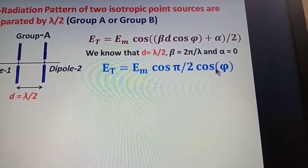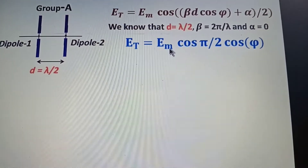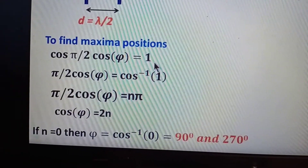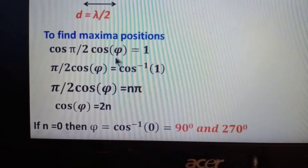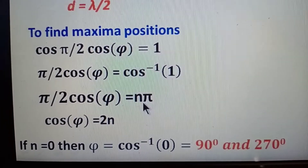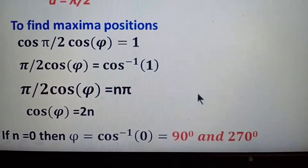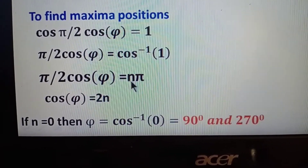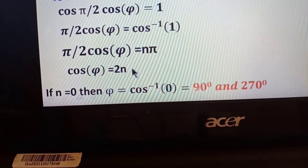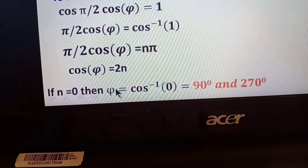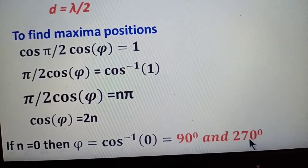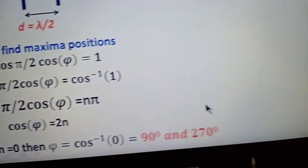To find the maxima positions, we set cos((pi/2) * cos(phi)) = 1, meaning (pi/2)*cos(phi) = cos⁻¹(1). The general solution is n*pi, so cos(phi) = 2n. For n = 0, phi = cos⁻¹(0), giving maxima at 90° and 270°.